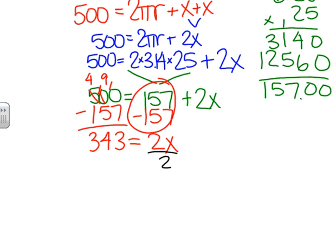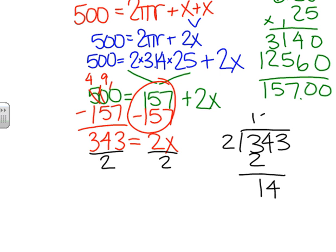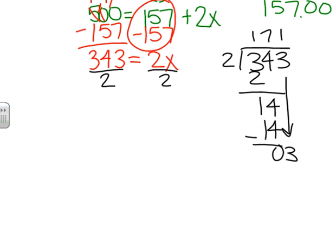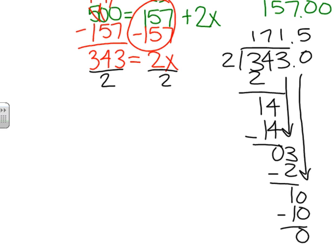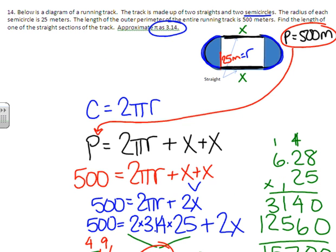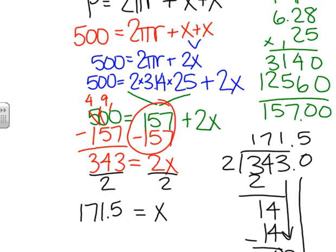So we get 343 equals 2X. Final step, divide by 2 on each side. If you need to, 343 divided by 2. 2 goes into 3 one time. One left over, so we're going to add a decimal. And 2 goes into 10 five times. So we get that X equals 171 and a half. So this is the distance along the straight. So that is in meters.